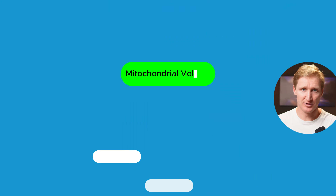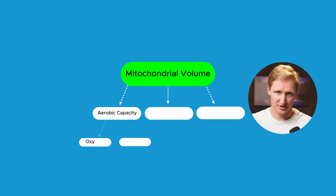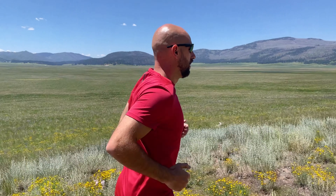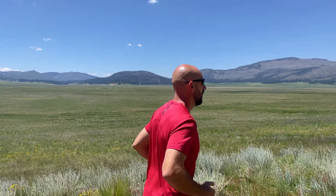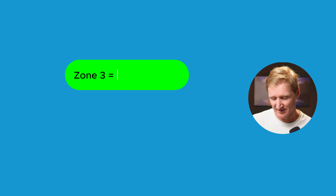This is essentially gray zone junk training. What you're trying to do in Zone 2 is elicit a low-dose, consistent stimulus you can recover from — one that's very specific to building mitochondrial volume, aerobic capacity to burn oxygen and fat, create ATP, and generate higher force production within your muscles. Adding hard efforts within your Zone 2 run means you're not getting a specific stimulus and you're adding unnecessary fatigue.